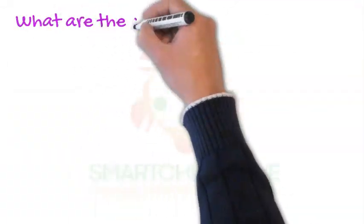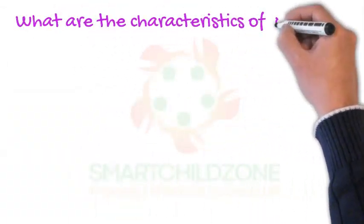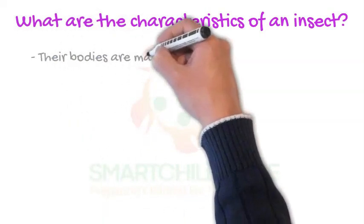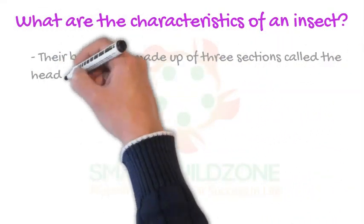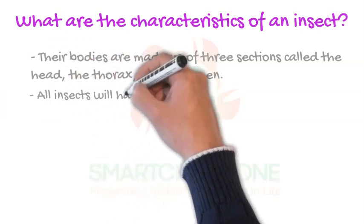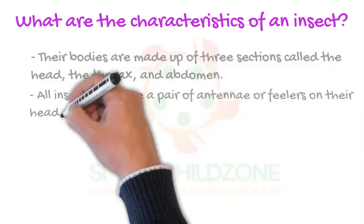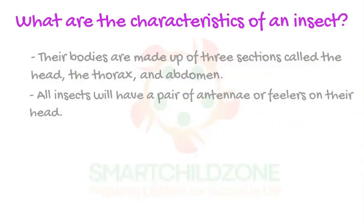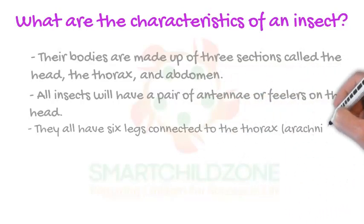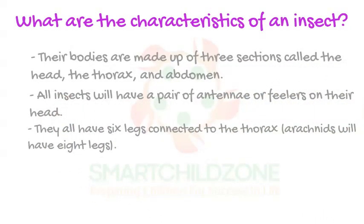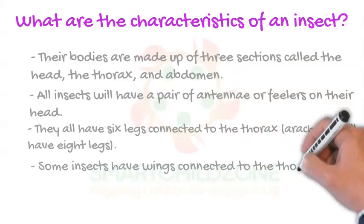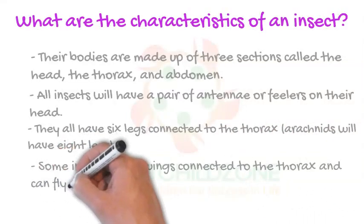What are the characteristics of an insect? Their bodies are made up of three sections called the head, the thorax, and abdomen. All insects will have a pair of antennae or feelers on their head. They all have six legs connected to the thorax, but arachnids like spiders will have eight legs. Some insects have wings connected to the thorax and can fly.